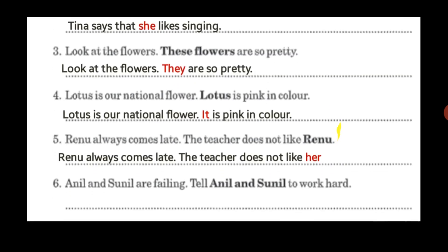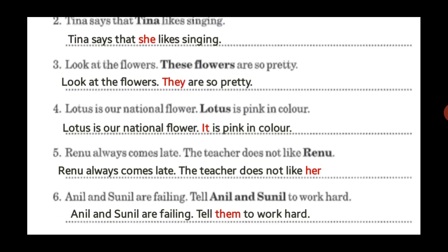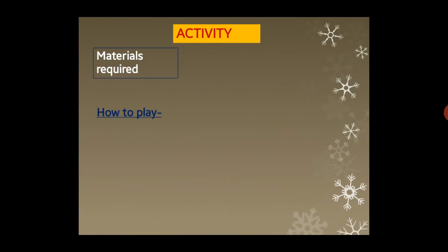'Anil and Sunil are failing — tell Anil and Sunil to work hard' becomes 'tell them to work hard'. I hope you've understood basic pronouns. We use pronouns to avoid repeating nouns. Now I'll end with an optional activity — if possible, play this with your mama, daddy, or siblings when they're free to help you.